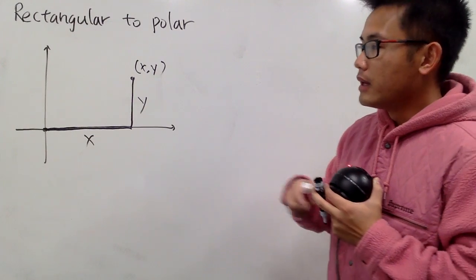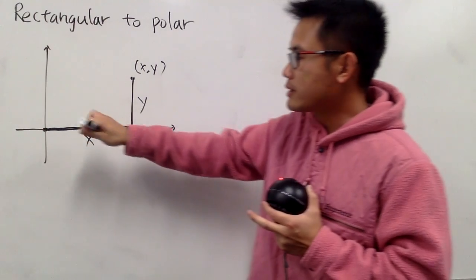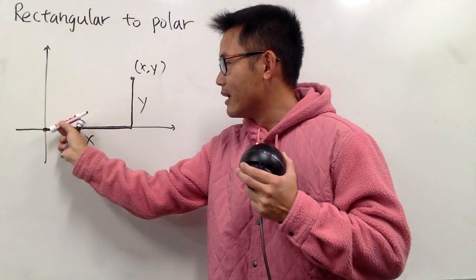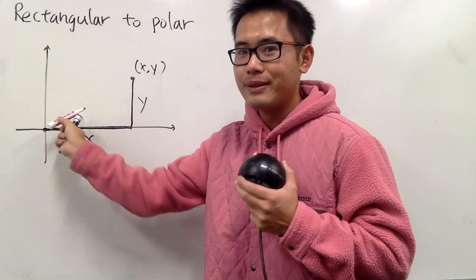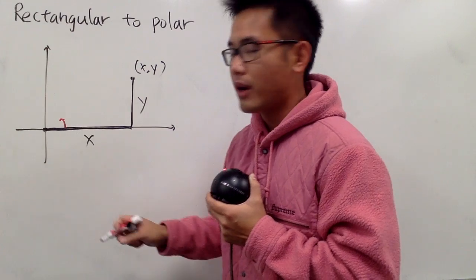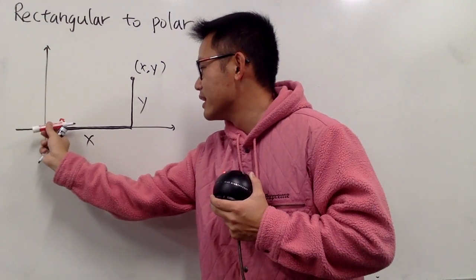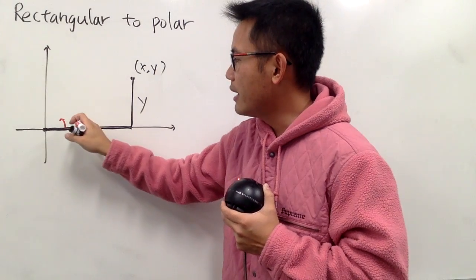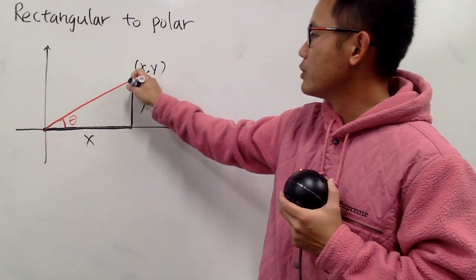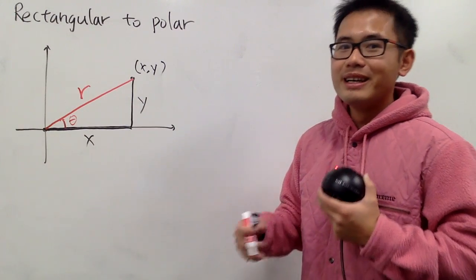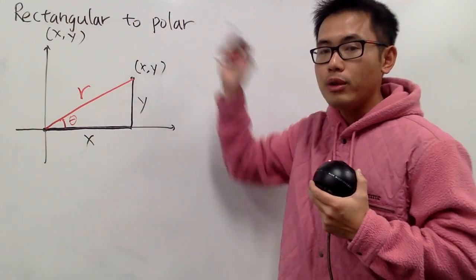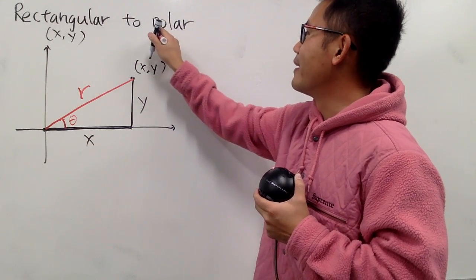The idea is: imagine you are right here at the center, and you're always going to be looking in this direction — the positive x-axis. What you are going to do is turn with an angle so that you can see the point. So you have to first tell me what's the angle we have to turn; we'll denote this by theta. The second thing is how far we have to go from the origin to this point, and we'll denote this by r. So rectangular coordinate is (x, y), and polar coordinate is (r, theta).